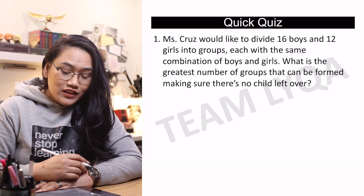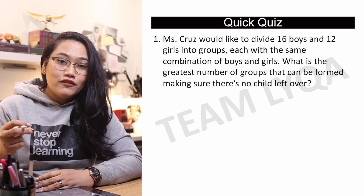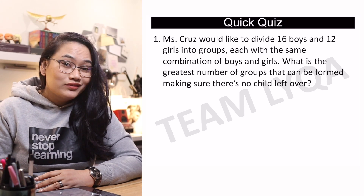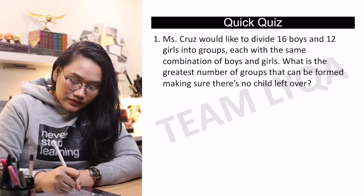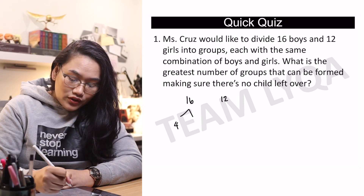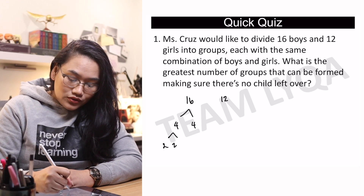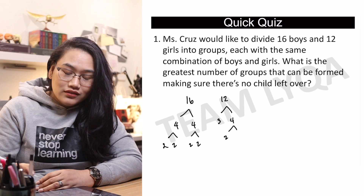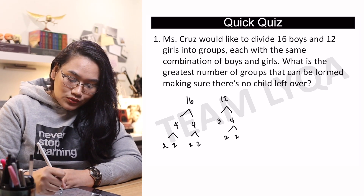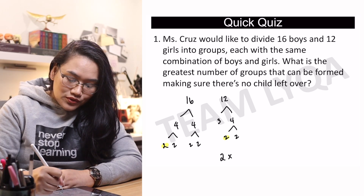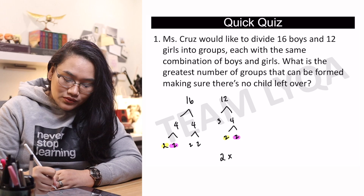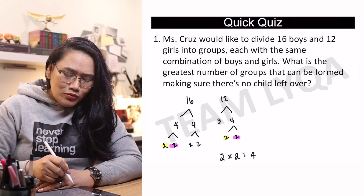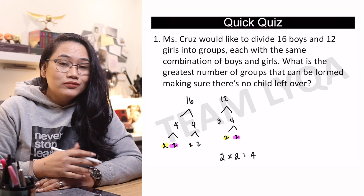Number 1 muna tayo. Ms. Cruz would like to divide 16 boys and 12 girls into groups, each with the same combination of boys and girls. What is the greatest number of groups that can be formed, making sure there's no child left over? We're just going to take 16 and 12. Kung factor tree, 16 could be 4 and 4, which can be broken down to 2, 2, 2, and 2. Sa 12, meron kang 3 and 4, at yung 4 ay again mahahati sa 2 and 2. Kung magpapares-pares tayo, may magpapares na 2, times another pair of 2. So 2 times 2 — meron pa bang iba? Wala nang pareho. So the answer is 4 groups. Pwede na bang mag-start sa 4 and 4 at 3 and 4 kasi napansin ko na may 4 na agad dun? Pwede naman — nasa sa inyo yan. Just make sure that you pay attention to the details para wala kayong makakalimutan.